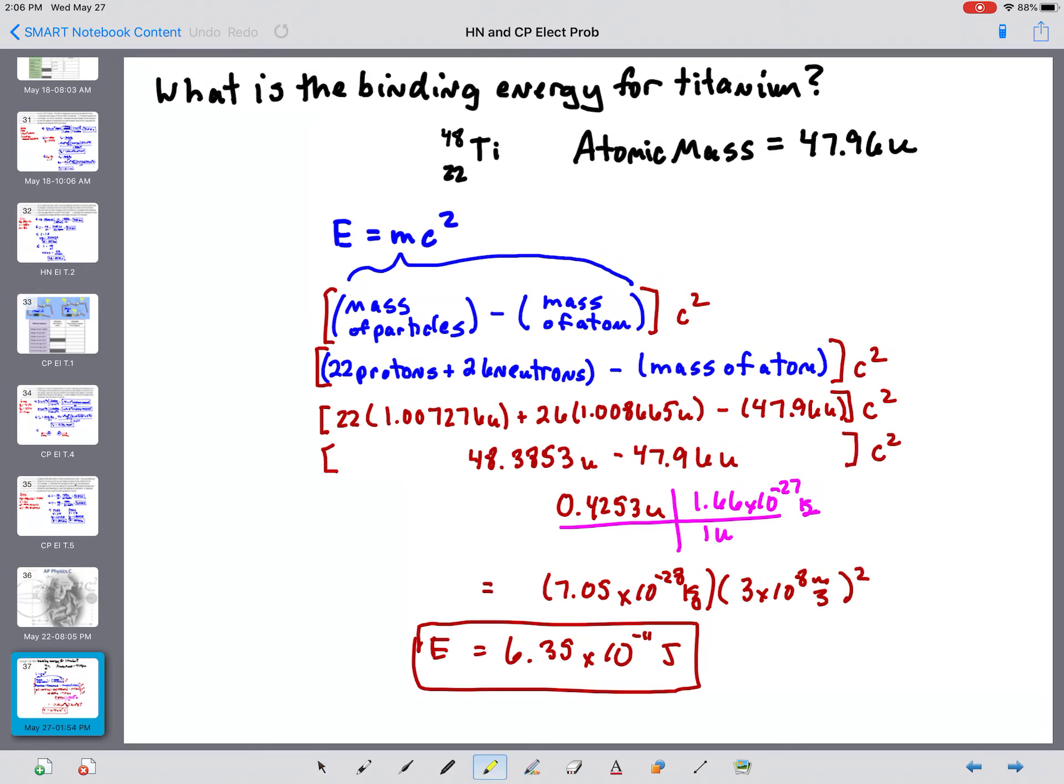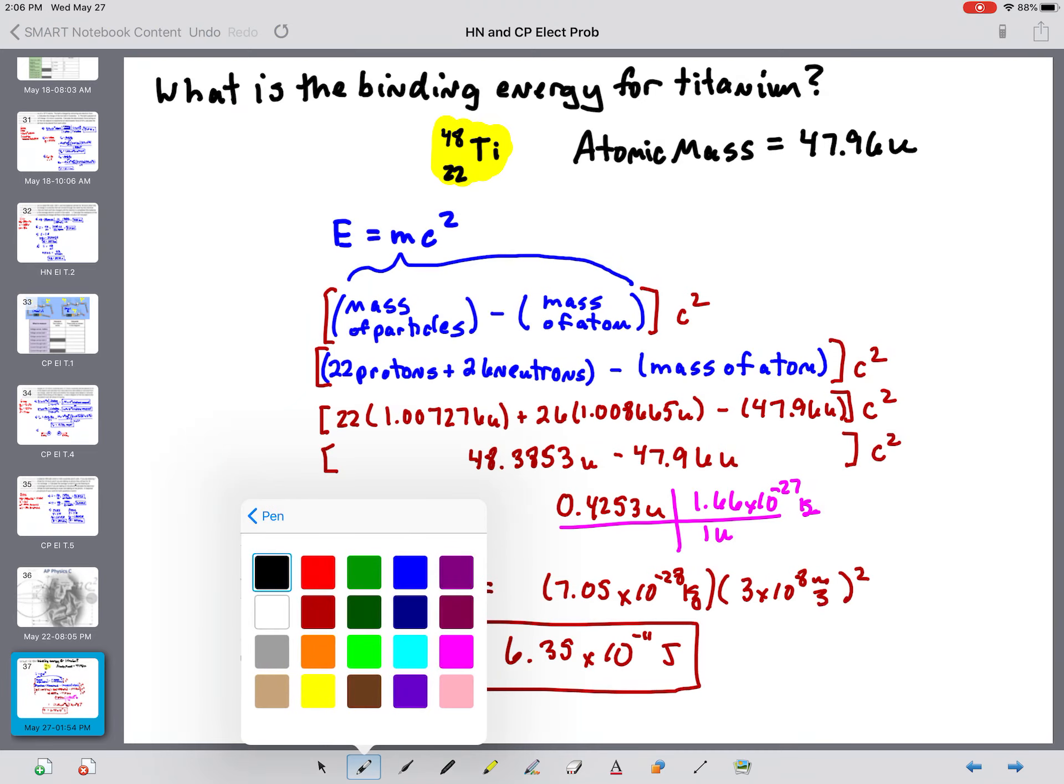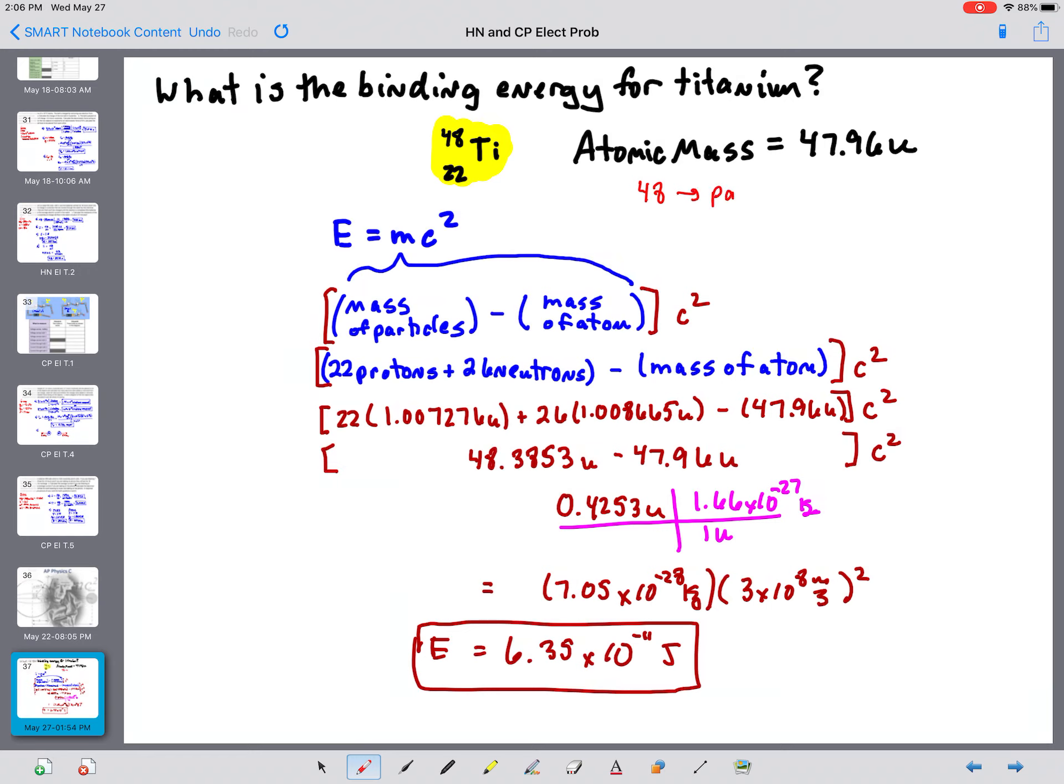So right here, I have the notation there, titanium 48/22. So in that notation, the 48 is the total number of particles you have in the nucleus, and the 22 is the number of protons.